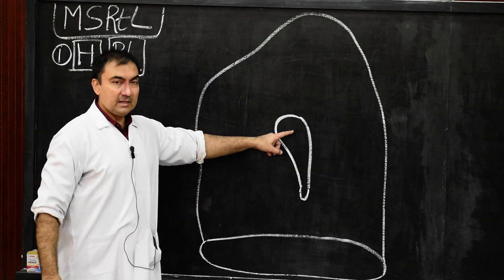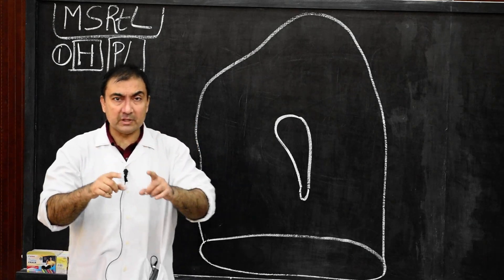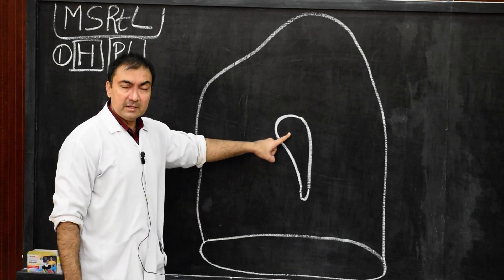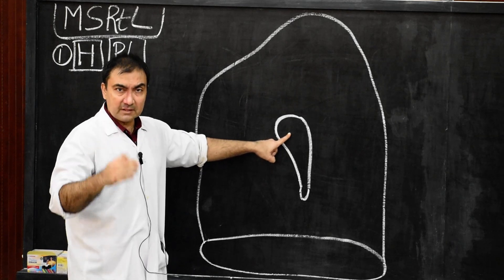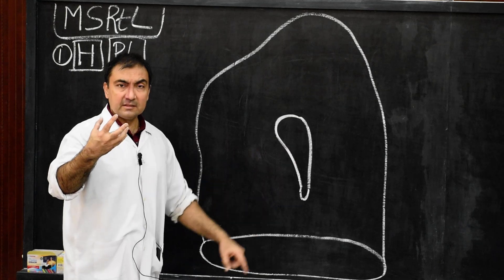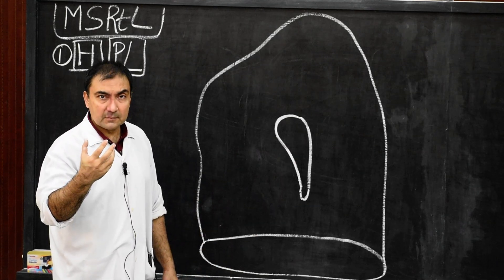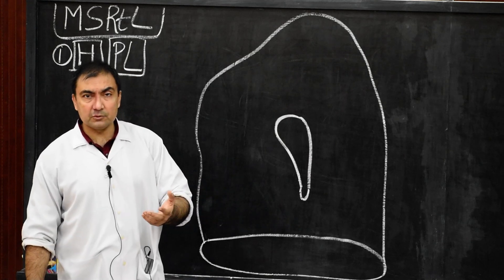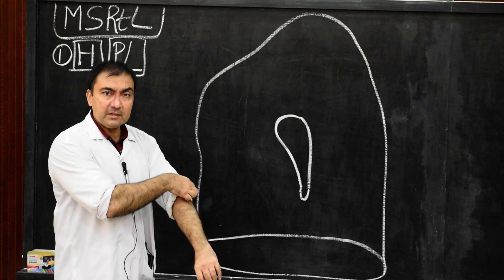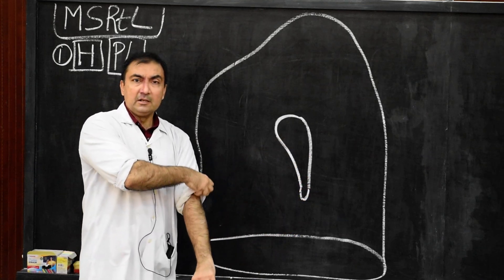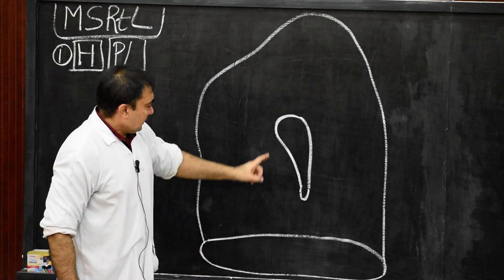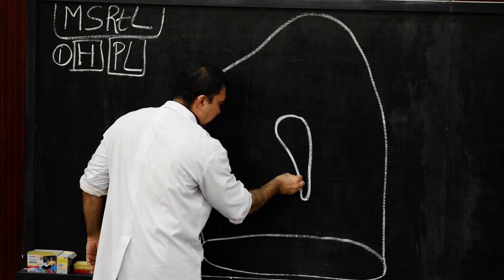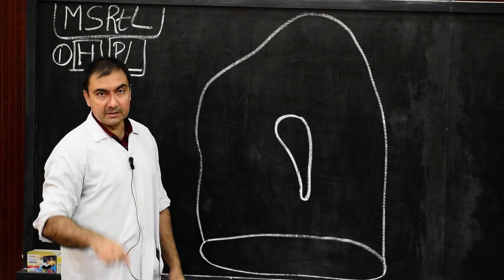The hilum of the lung is a triangular non-pleural impression on the mediastinal surface of the lung, through which various structures of the root of the lung will enter and exit the lung. This hilum is continuous below with the pulmonary ligament.